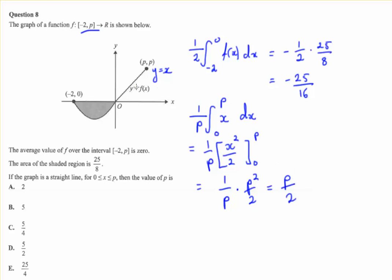So the average value of the function for this section is p over 2. The average value of the function for this section is negative 25 over 16. How do you combine these two? We need to combine them, because we know the average value over the entire interval is 0.